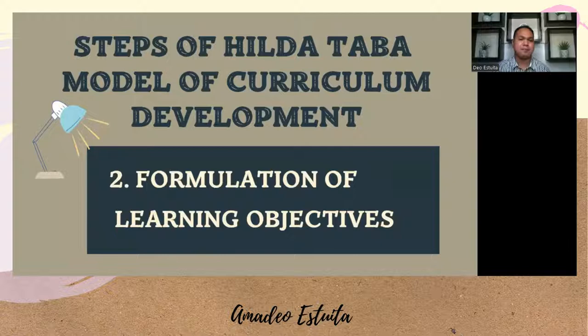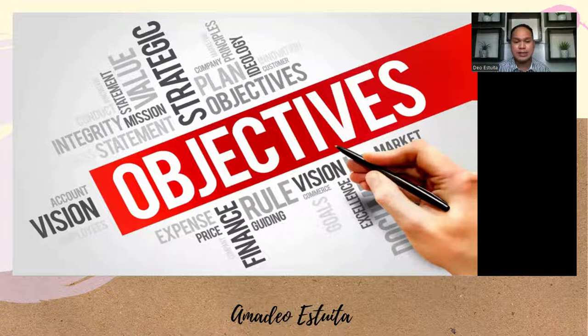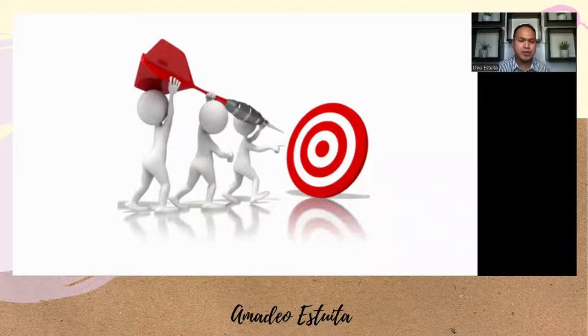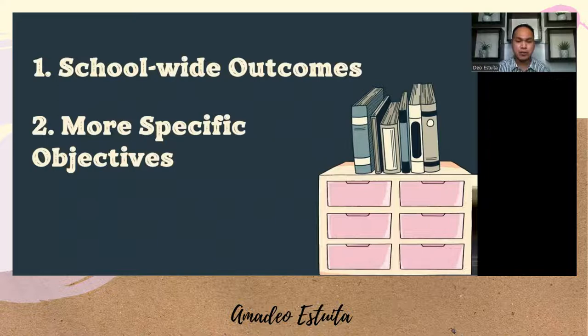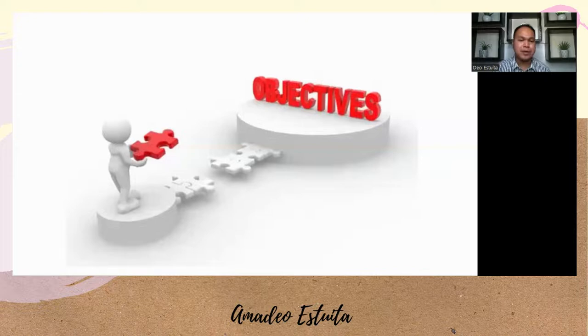The second step of the Hilda Taba model is the formulation of learning objectives. After the teacher has identified the needs of learners that require attention, he or she specifies the objectives by which needs to be fulfilled. The development of overall goals originates from a variety of authentic sources, such as demands of society and needs of students. Taba found that the function of objectives was twofold: school-wide outcomes on one hand, and more specific objectives that describe behaviors to be obtained in a certain unit, subject area, course, or program on the other.